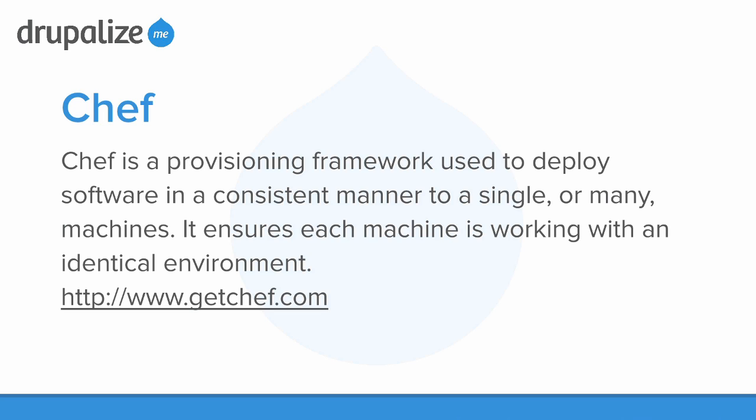Finally, Chef. Chef is a provisioning framework used to deploy software in a consistent manner to a single or many machines. It ensures each machine is working in an identical environment or has identical software installed. We're going to be using Chef Solo. Chef can also be used in a network environment where you're using it to provision many nodes — perhaps one is a database server, some are responsible for load balancing, some for the actual installation of Drupal. We're not going to be doing anything that complicated. We're just going to have Chef provision a solo or single machine on our local environment using the provisioning scripts available from the host machine.